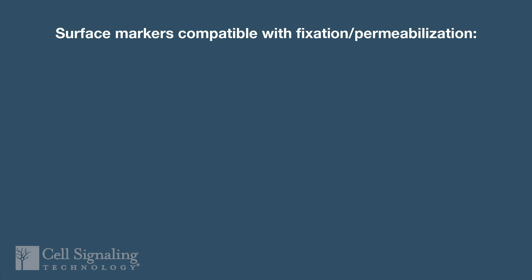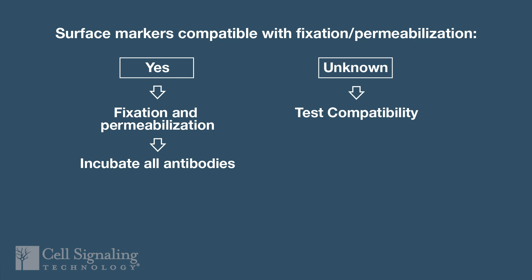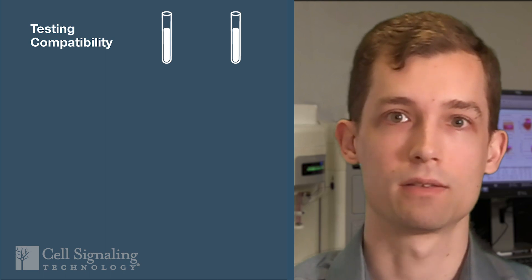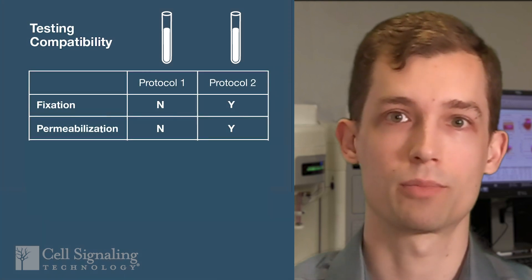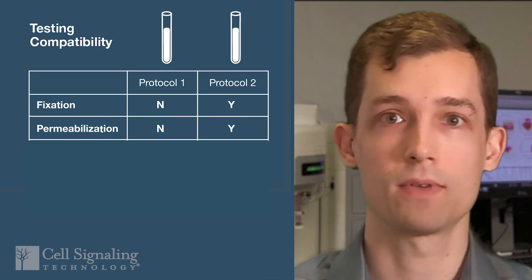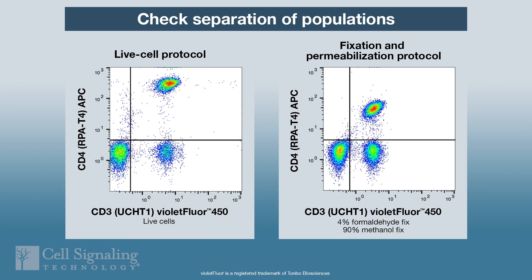If all of your surface markers are known to be compatible with a fixation and permeabilization protocol, you can simply incubate all your antibodies together in one step. On the other hand, if you don't have information on protocol compatibility for one of your surface marker antibodies, you can set up a simple experiment. Take two aliquots of live cells and fix and permeabilize one aliquot following the protocol you are using for your intracellular antibodies. Then label both your live and fixed aliquots with your surface marker antibodies, wash, and compare cytometry results. Make sure you can still clearly distinguish your positive and negative populations in the fixed and permeabilized cells.